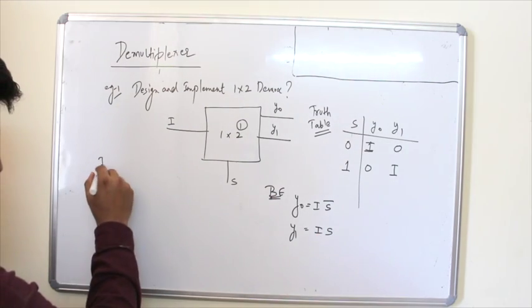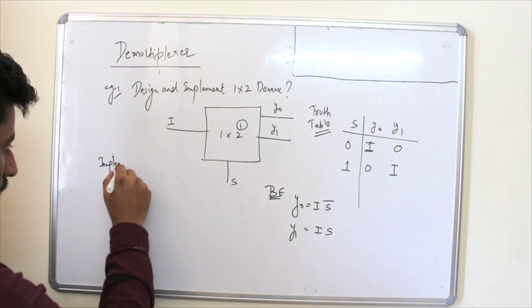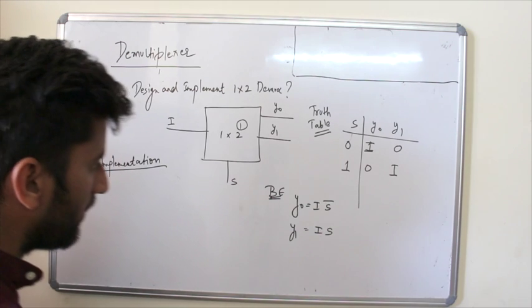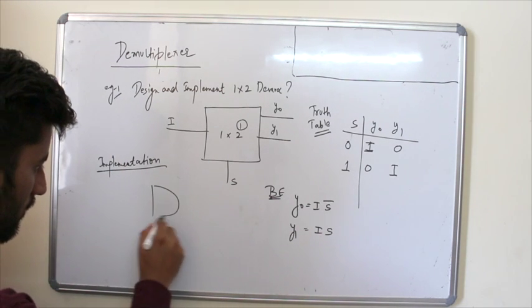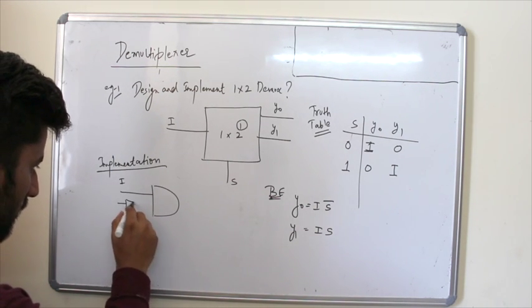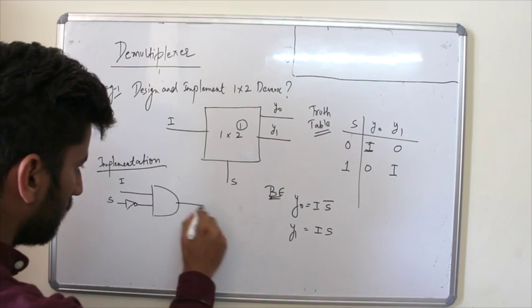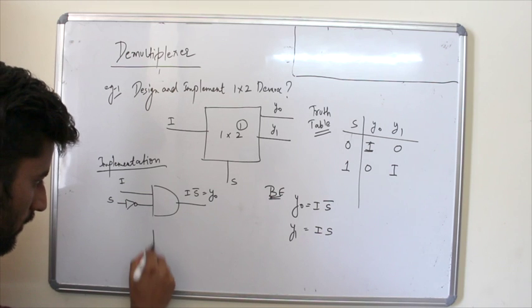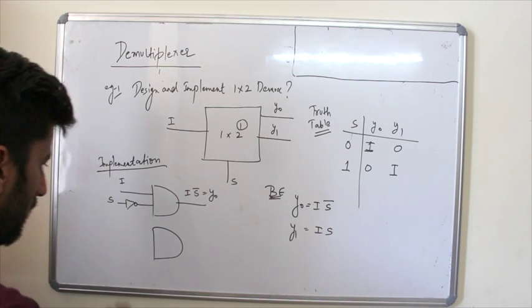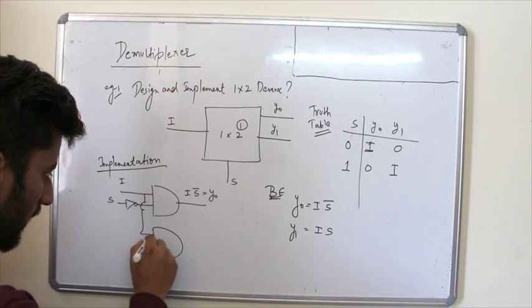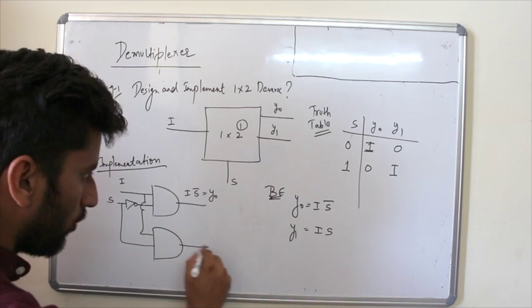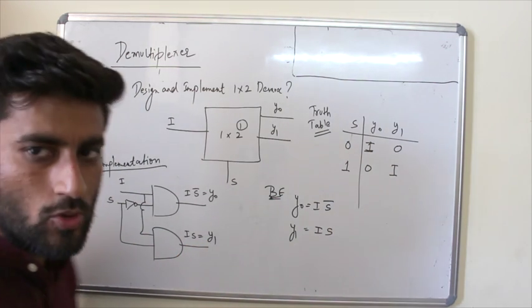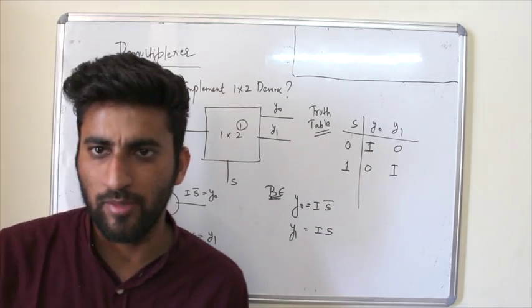Last part is implementation. So implementation, this is i input. This is nothing but with not gate s. This will get you what? i s bar. This becomes your y0. And what about this? Another and gate where i is going like this and we have s. You will get what? i s. This is y1. So this is your 1 into 2 demux.